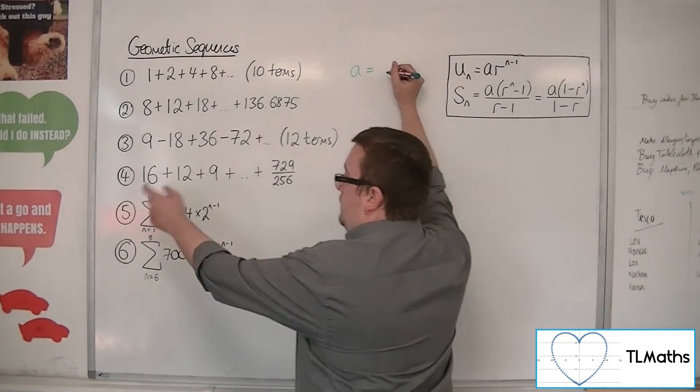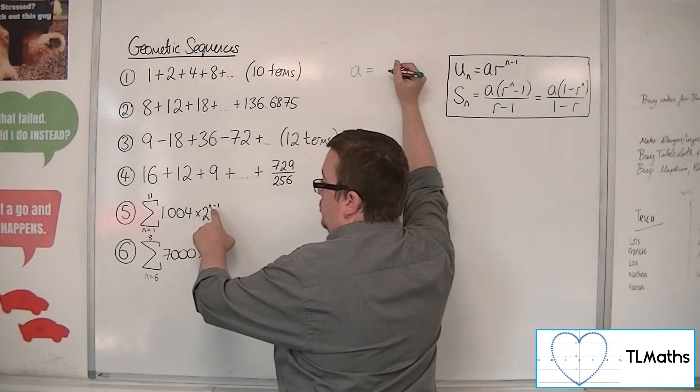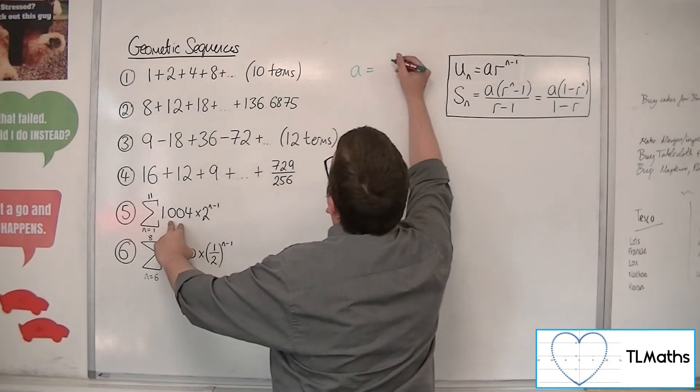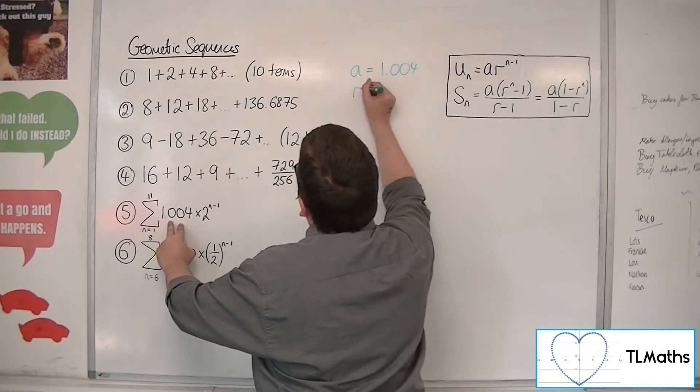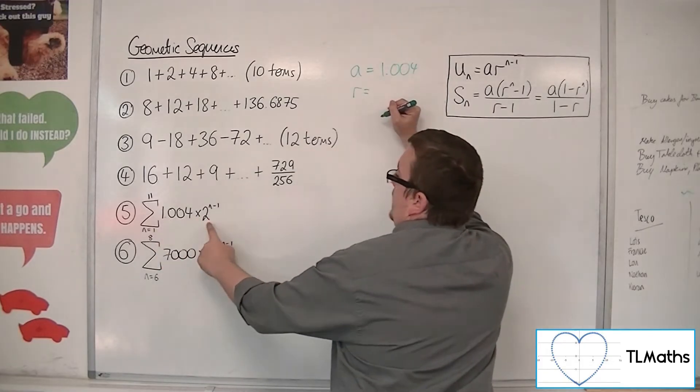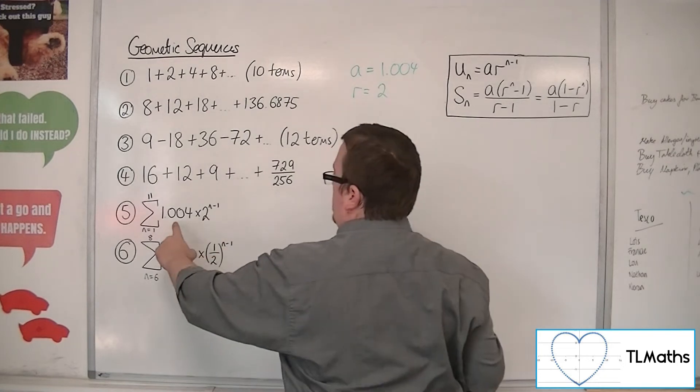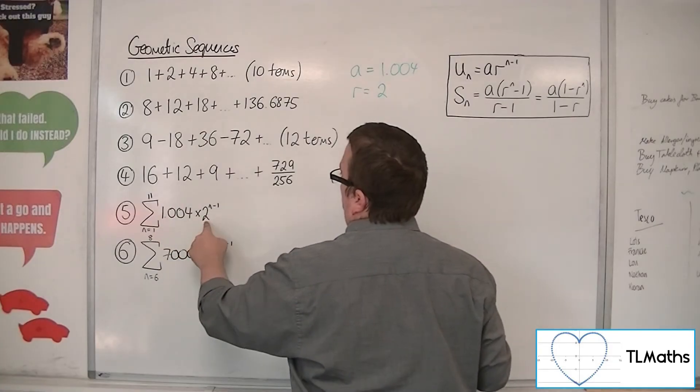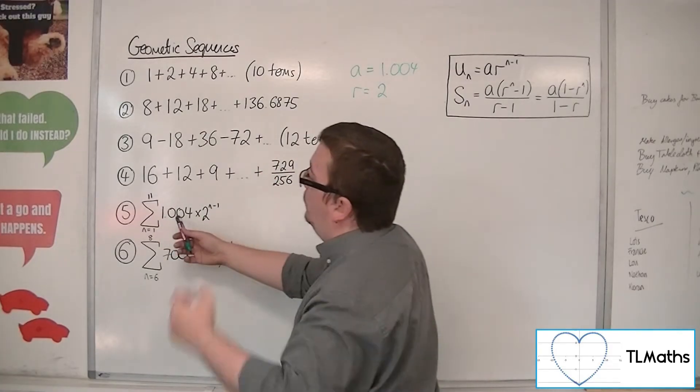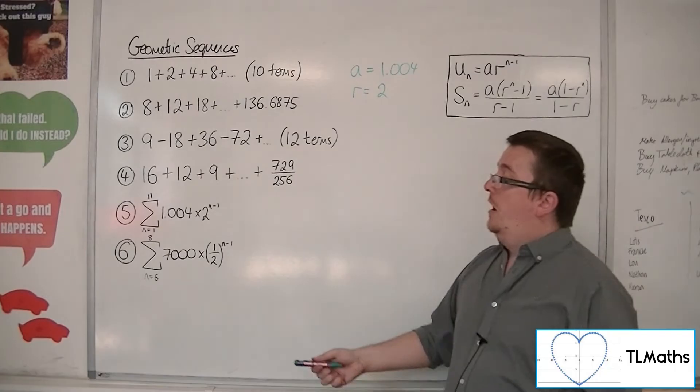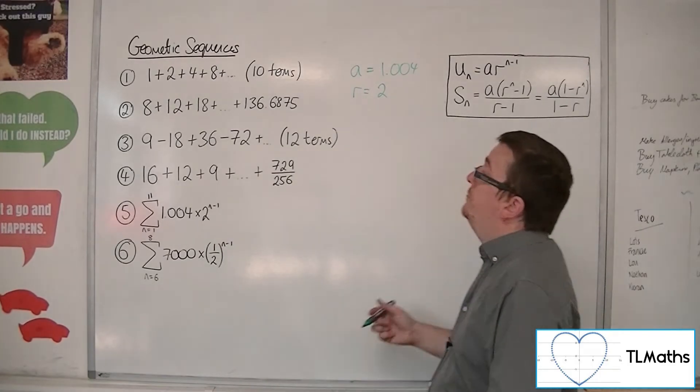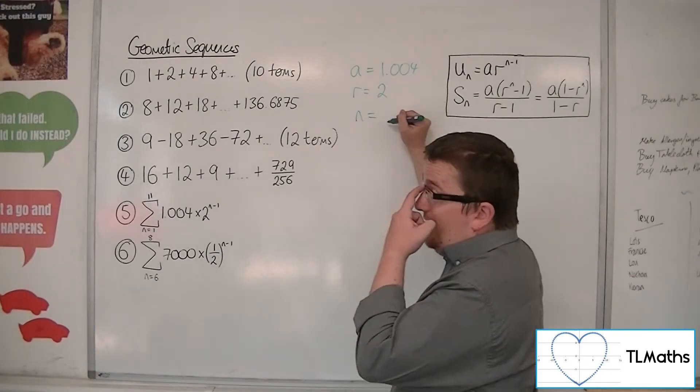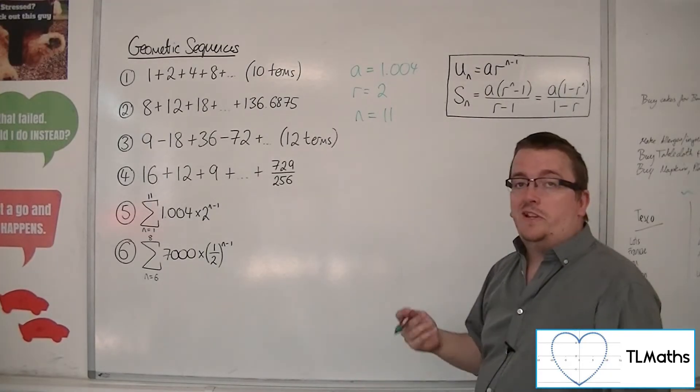So a is when n is 1. So when n is 1, I get 2 to the 1, take away 1, so 2 to the 0, which is just 1. So I get 1.004. Now the common ratio is clearly 2. I mean, this even looks like, in exactly the same format as this nth term, a times r to the n minus 1. So a is clearly the 1.004, r is clearly the 2. And then finally, you've got how many terms there are. Well, we're going from the first term up to the 11th, and so there is 11 terms.